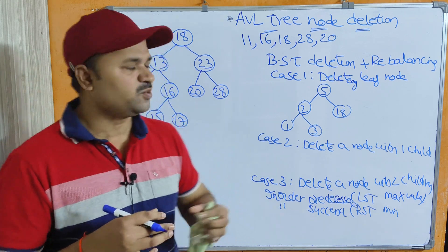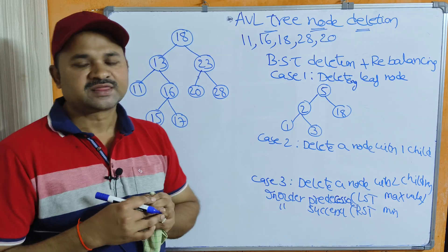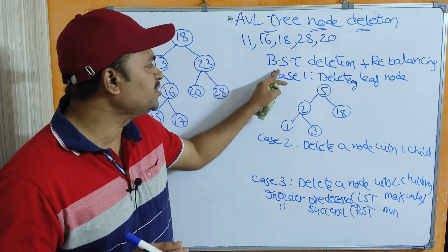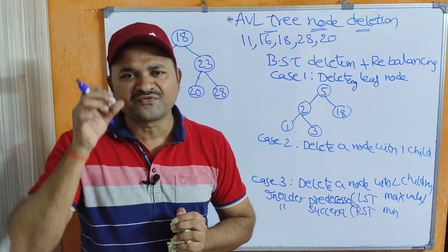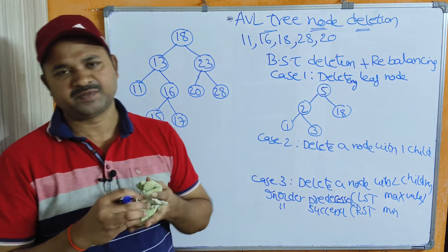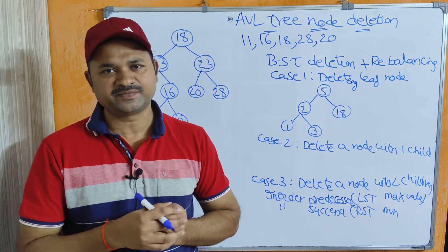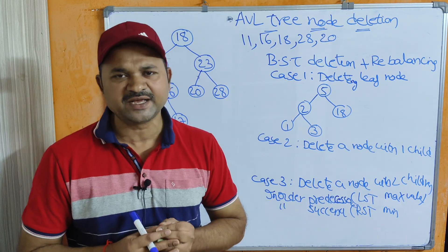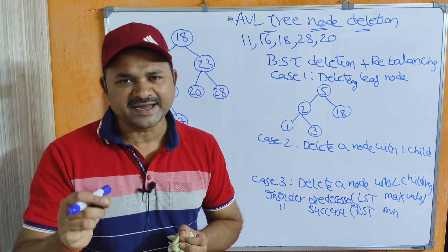Now let us discuss about AVL tree node deletion. The deletion of a node from an AVL tree is similar to the binary search tree node deletion, but after deleting the node we have to rebalance the AVL tree. In an AVL tree, after performing insertion or deletion, we need to calculate the balance factor for each and every node in the tree.